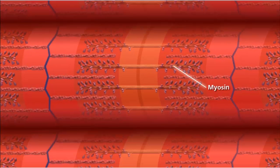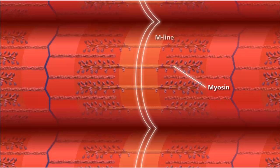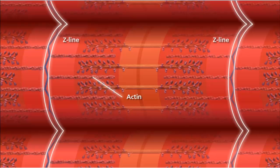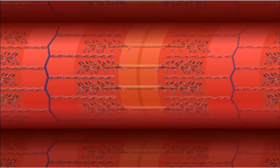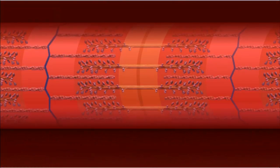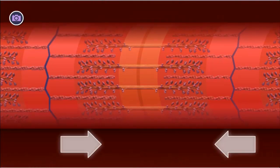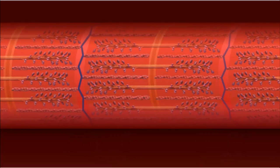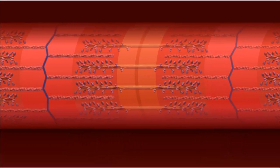The thick filaments are myosin, which are anchored at the center of the sarcomere called the M-line. The thin filaments are composed of the protein actin, which are anchored to the Z-lines on the outer edges of the sarcomere. Because the actin filaments are anchored to the Z-lines, the sarcomere shortens from both sides when actin filaments slide along the myosin filaments.